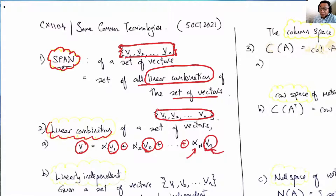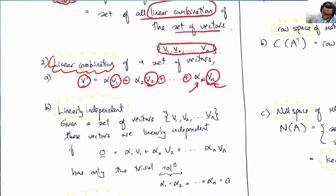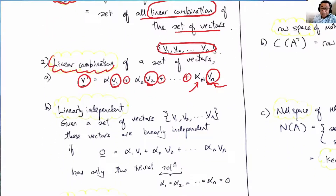We cannot have Vn squared, Vn cubed, cosine of Vn, and so on — that's not a linear combination. Now, once we have a linear combination, we are also interested in another term called linear independence.